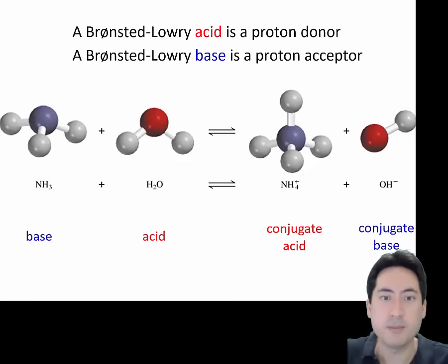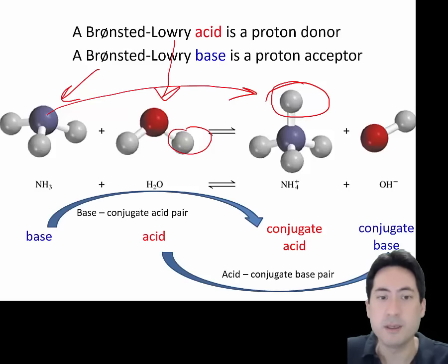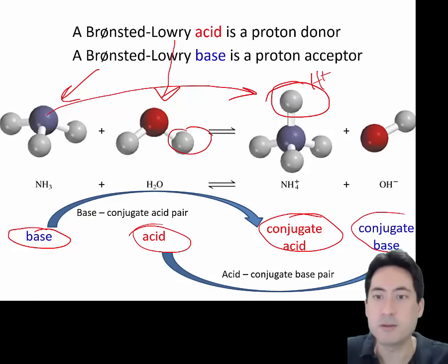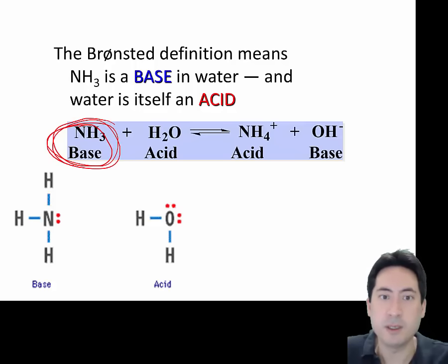A Bronsted-Lowry acid is a proton donor; a Bronsted-Lowry base is a proton acceptor. Here, ammonium has accepted the proton, so that makes it the base. The water here is the donor, making it the acid in this case. The base becomes a conjugate acid because you can always work backwards — it would then release the hydrogen ion. With the water being the acid, its partner is called a conjugate base, because it can accept a proton in the opposite direction. So with this new Bronsted-Lowry definition, we call ammonia a base and water an acid.